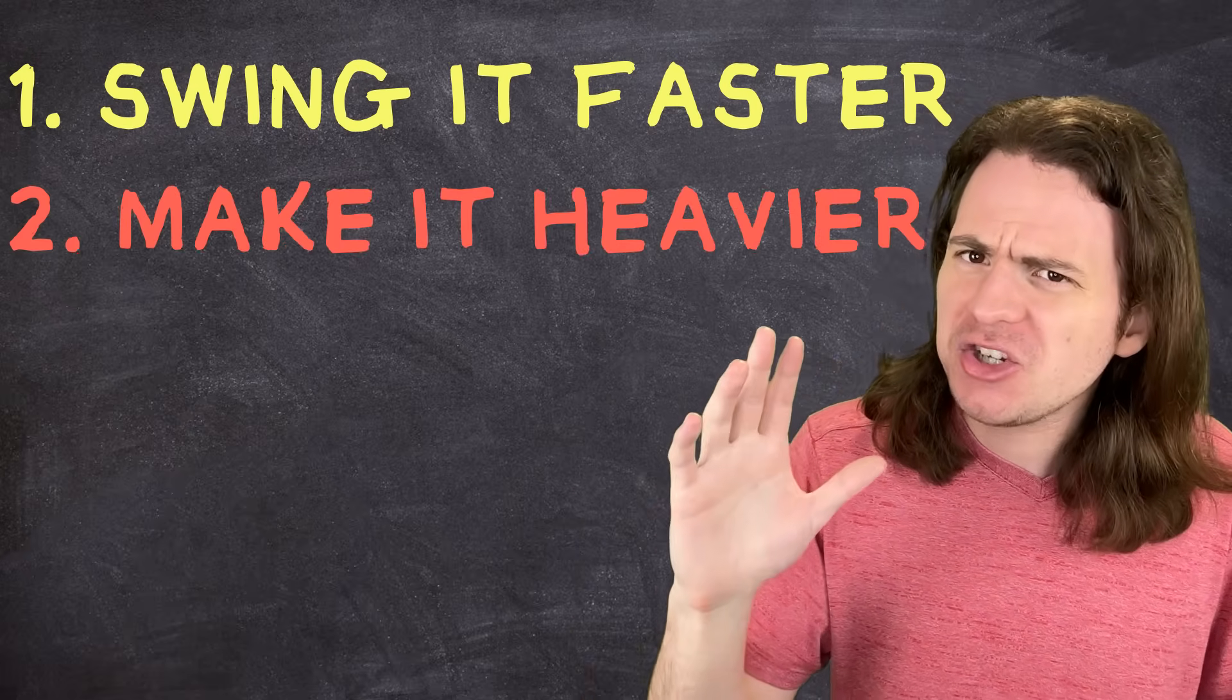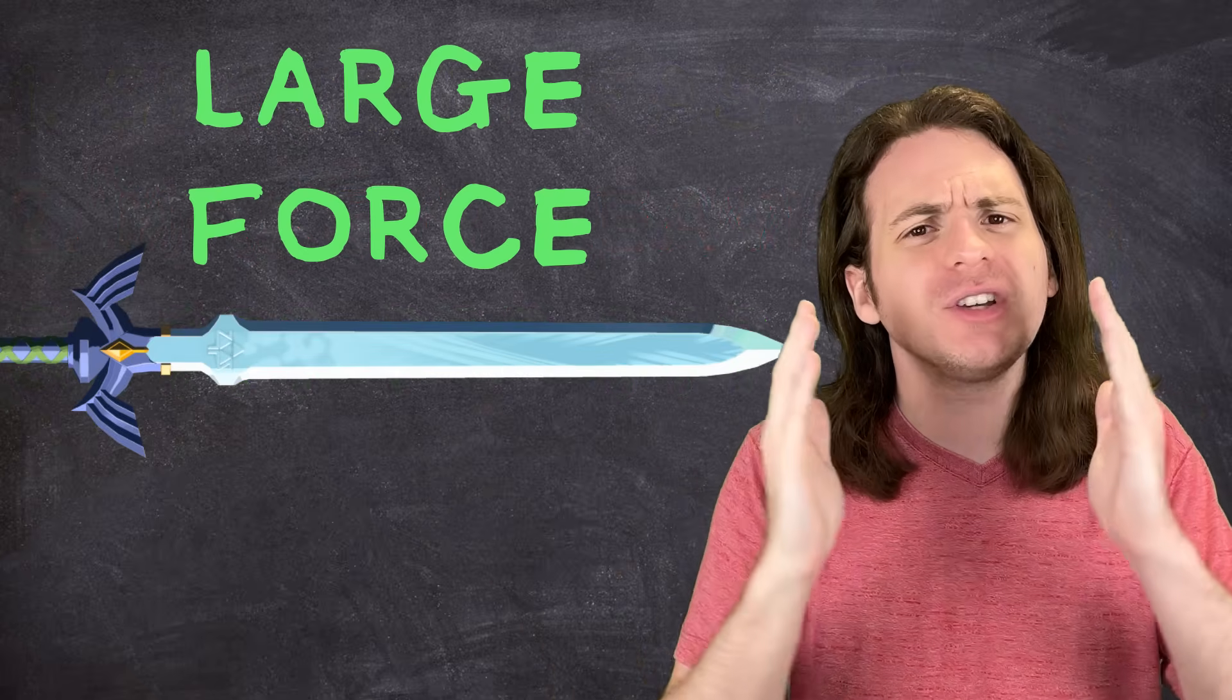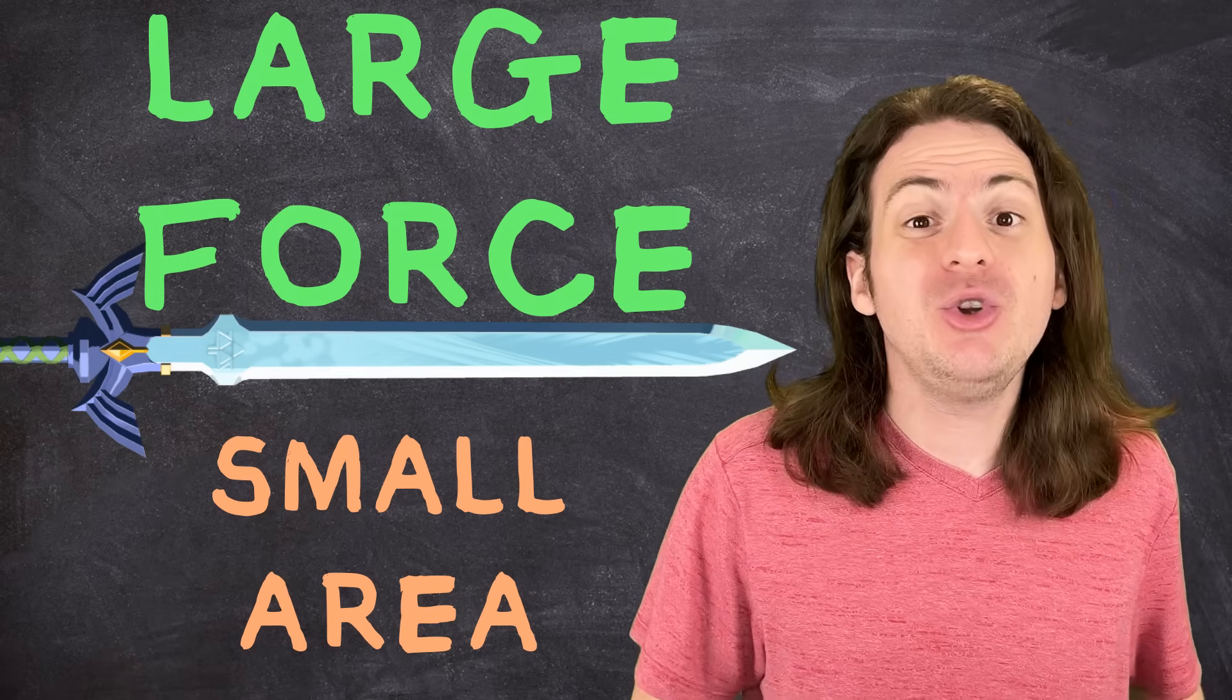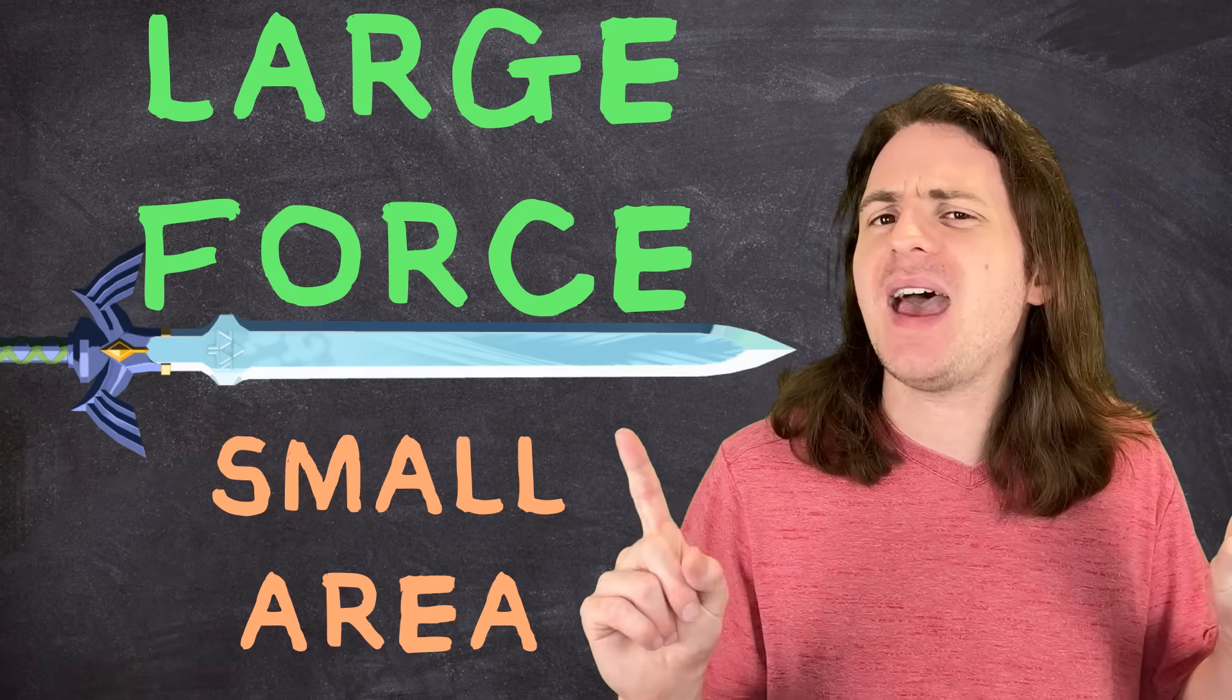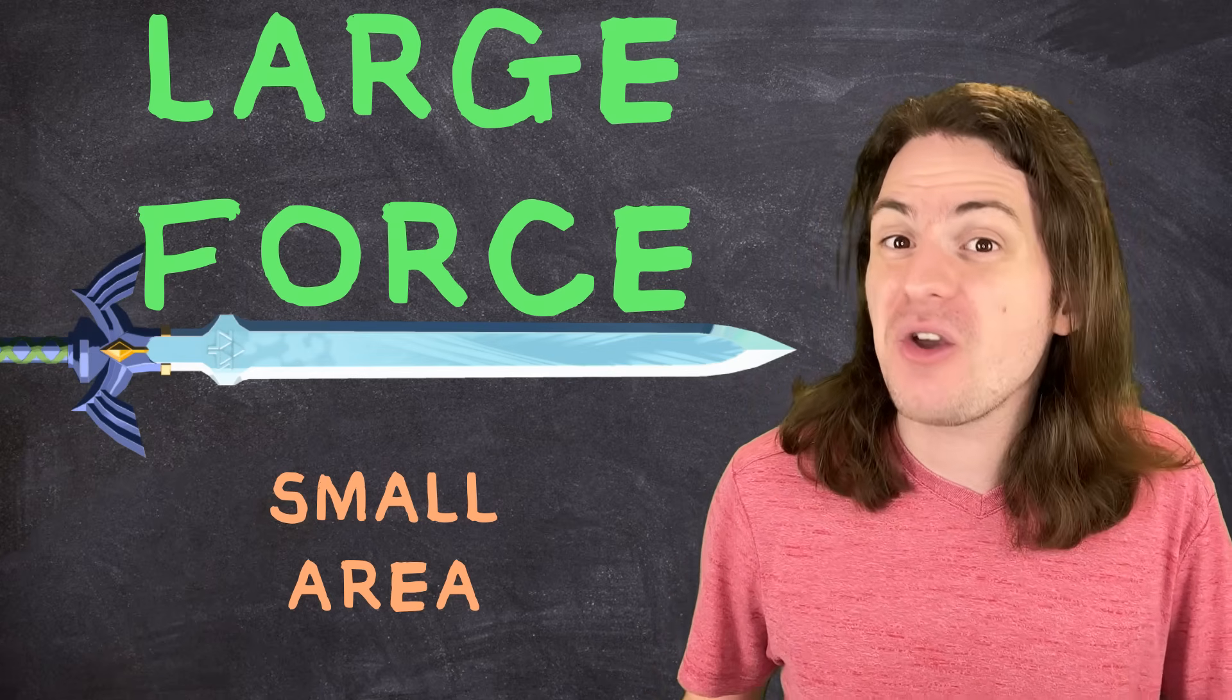But there's actually an easier way. In the beginning, I said that there were two ways to increase the cutting power of a sword: swing it faster or make it heavier. But there's actually a secret third option. Remember, the whole point of a sword is to apply a big force over a small area. If you want a sword that can cut better, you could increase the force, or you could do what smiths in history actually did and make that area smaller: use stronger materials that can hold a sharp edge for longer. As you move through time, you'll see the prime choice of weapon material change from the relatively soft but easy to work with bronze to harder iron and finally steel. Turns out, it's a lot easier and cheaper to make a sharper sword instead of a heavier one.